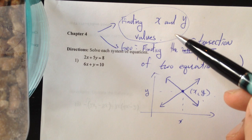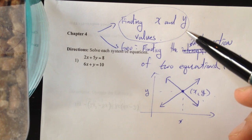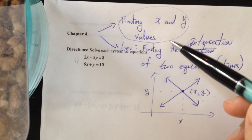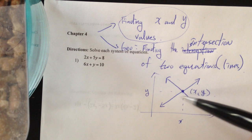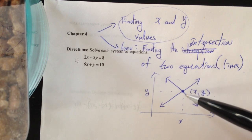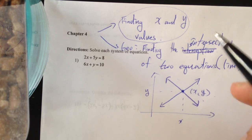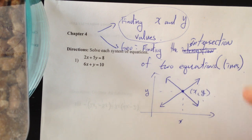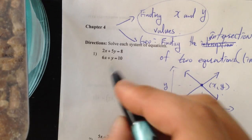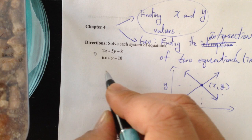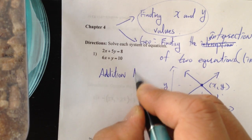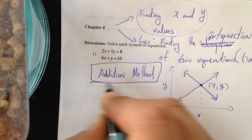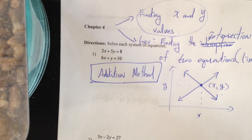There are two techniques that chapter four explains. Of course, geometrically we could always graph equations and pinpoint where they meet. Algebraically, we'll figure it out systematically. The first technique we're going to study is called the addition method.